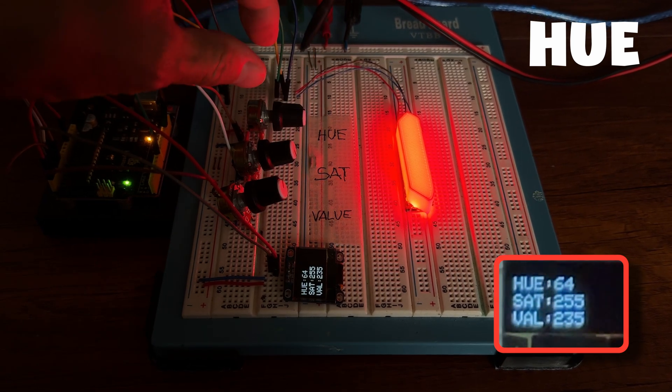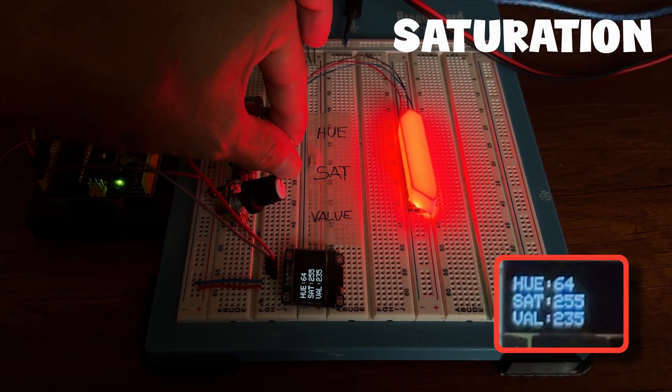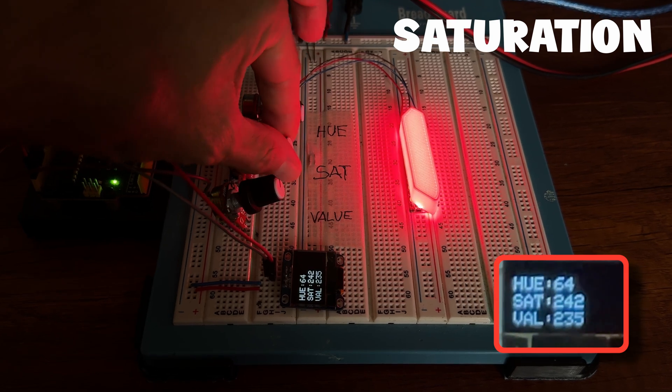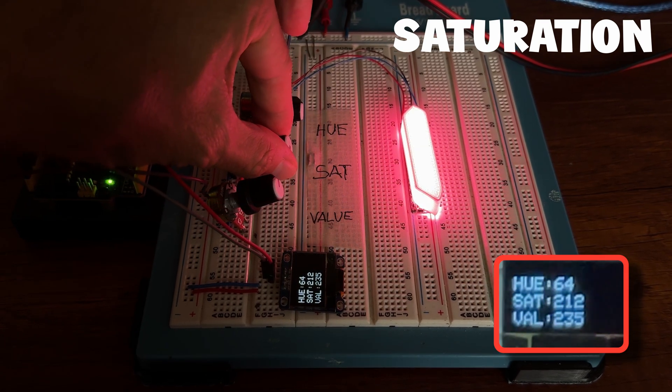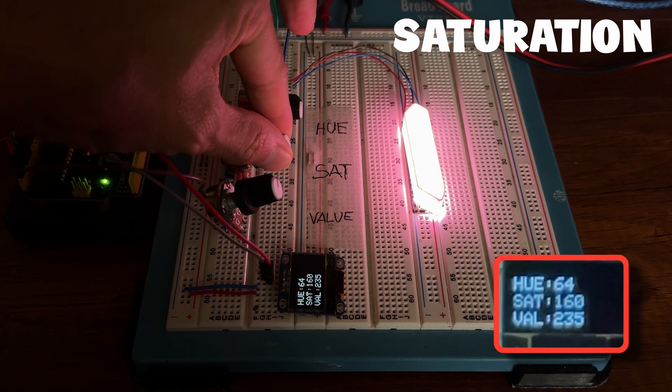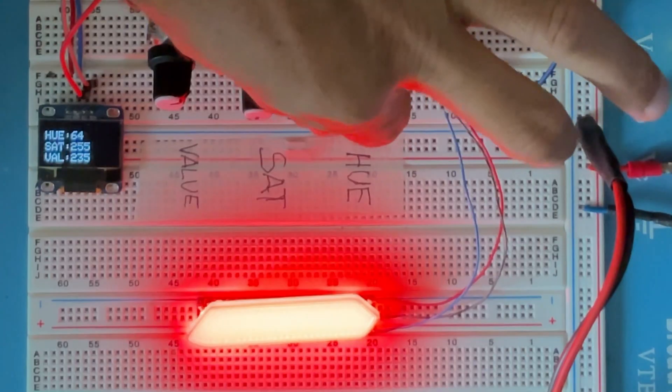When I change the saturation value, the color tends to go toward gray, to turn off. The higher the saturation value, the fuller the color.